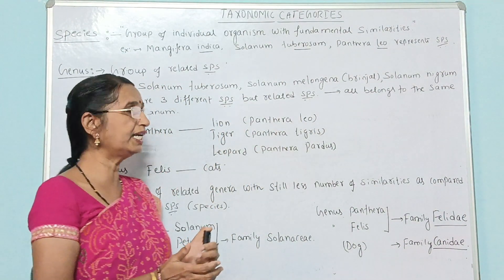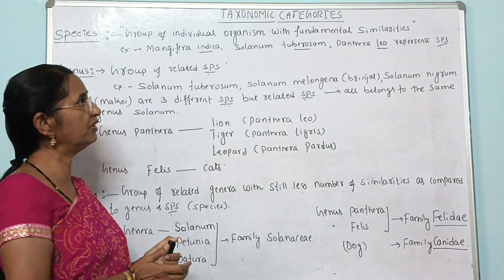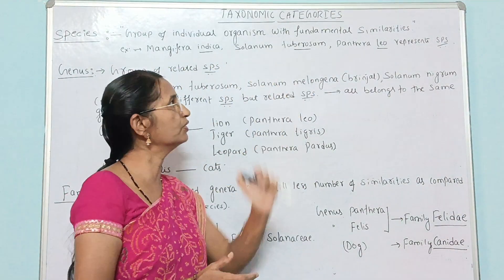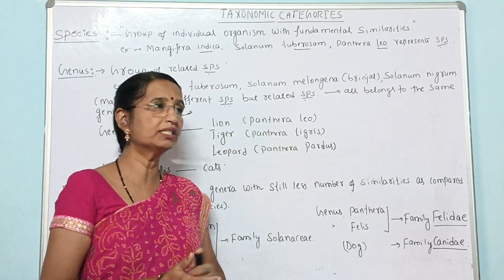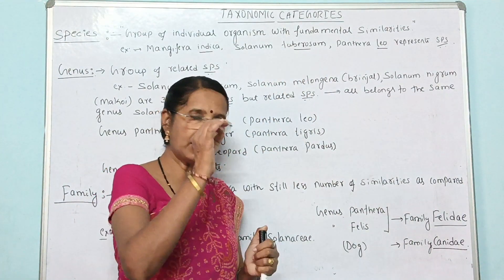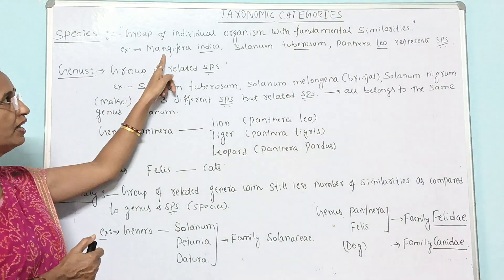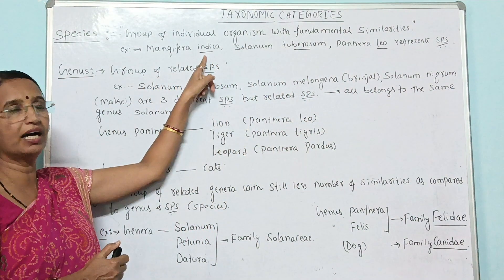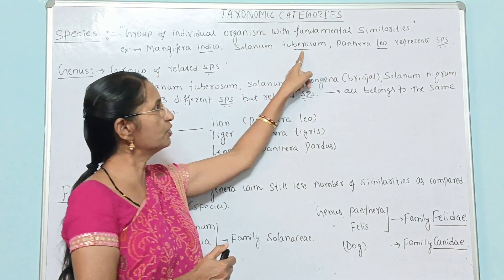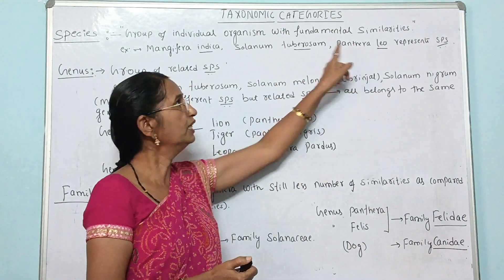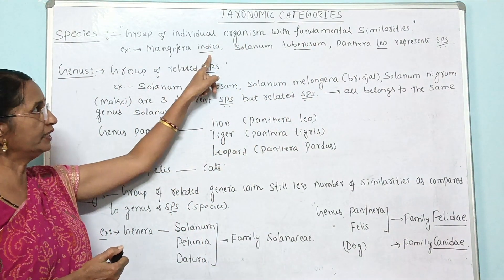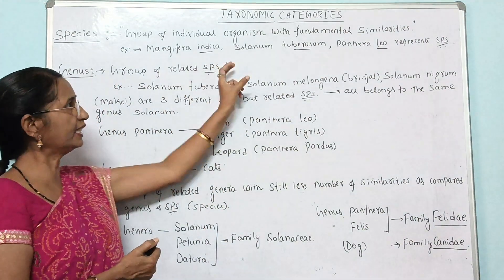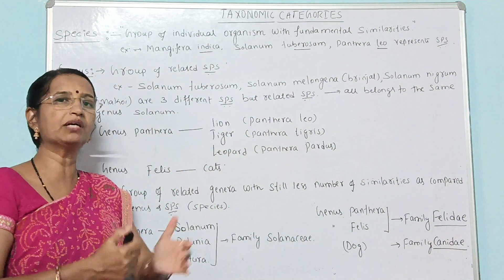Let us understand some examples of species. Examples include Apis mellifera indica, Solanum tuberosum, and Panthera tigris. Here, mellifera, Solanum, and Panthera are the genera, while indica, tuberosum, and tigris are the specific epithets — they are the species. By this example it is clear that species can interbreed among themselves and produce a fertile offspring.